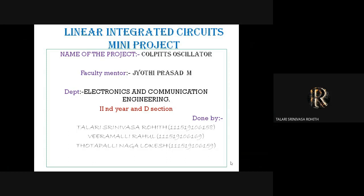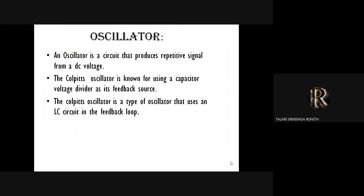At first, we are discussing what is an oscillator. An oscillator is a circuit that produces a repetitive signal from a DC voltage. The Colpitt's oscillator is known for using a capacitor voltage divider as its feedback source.